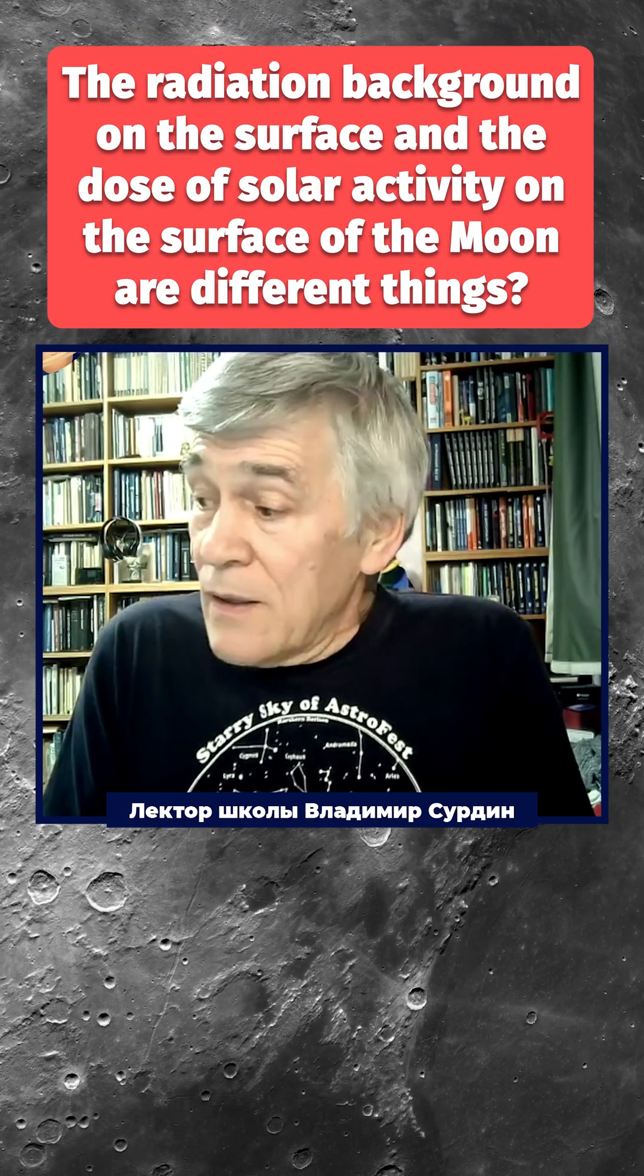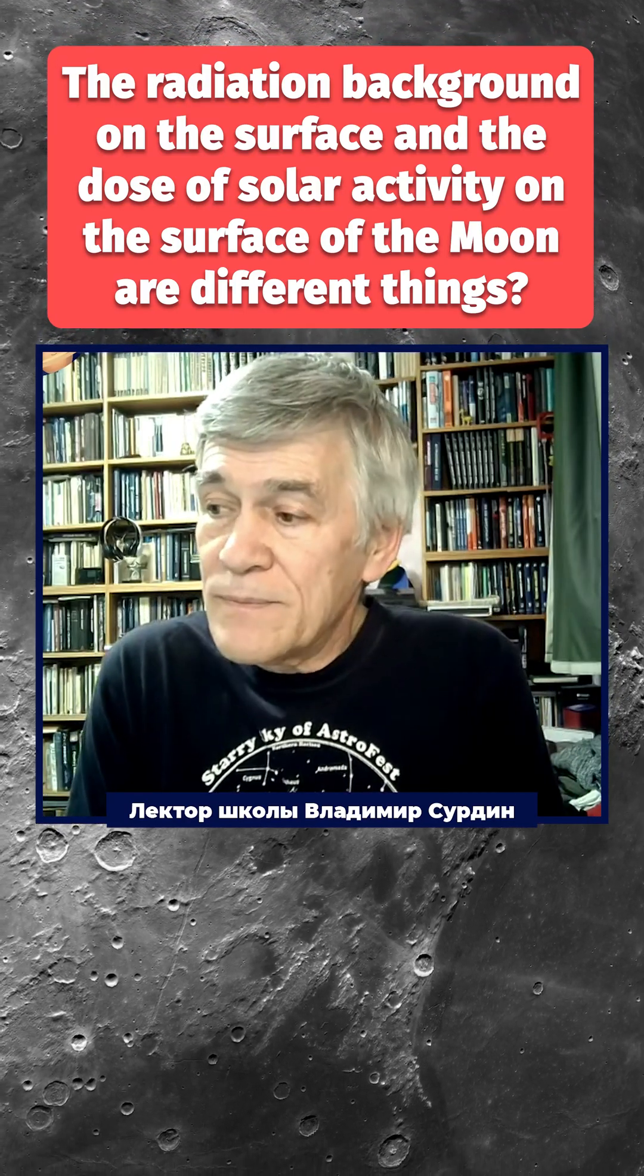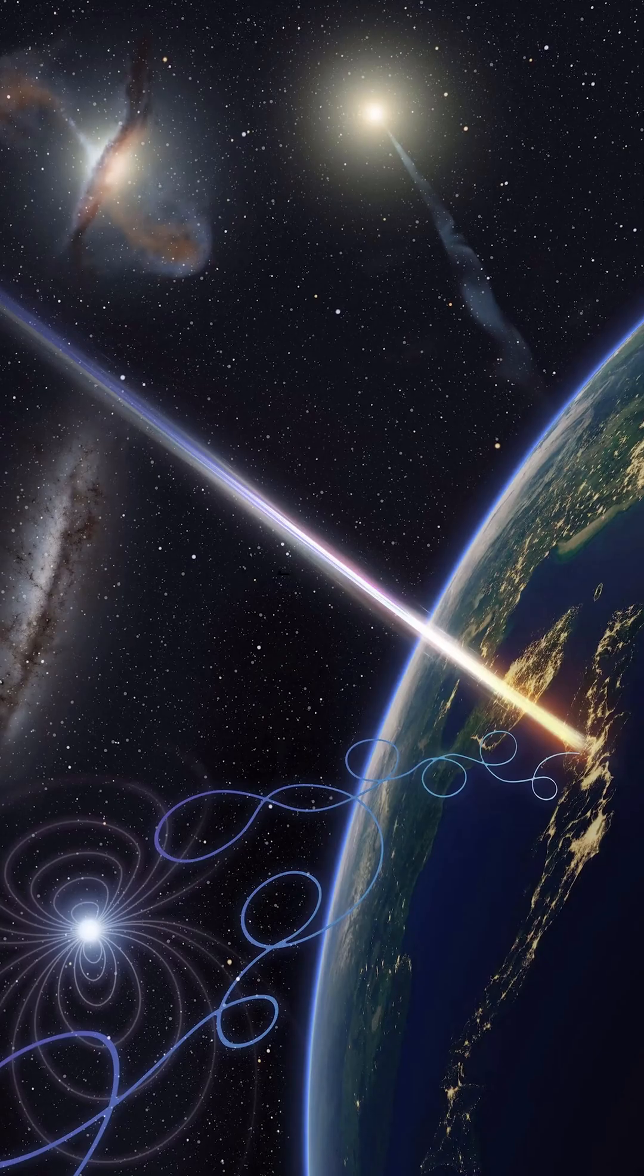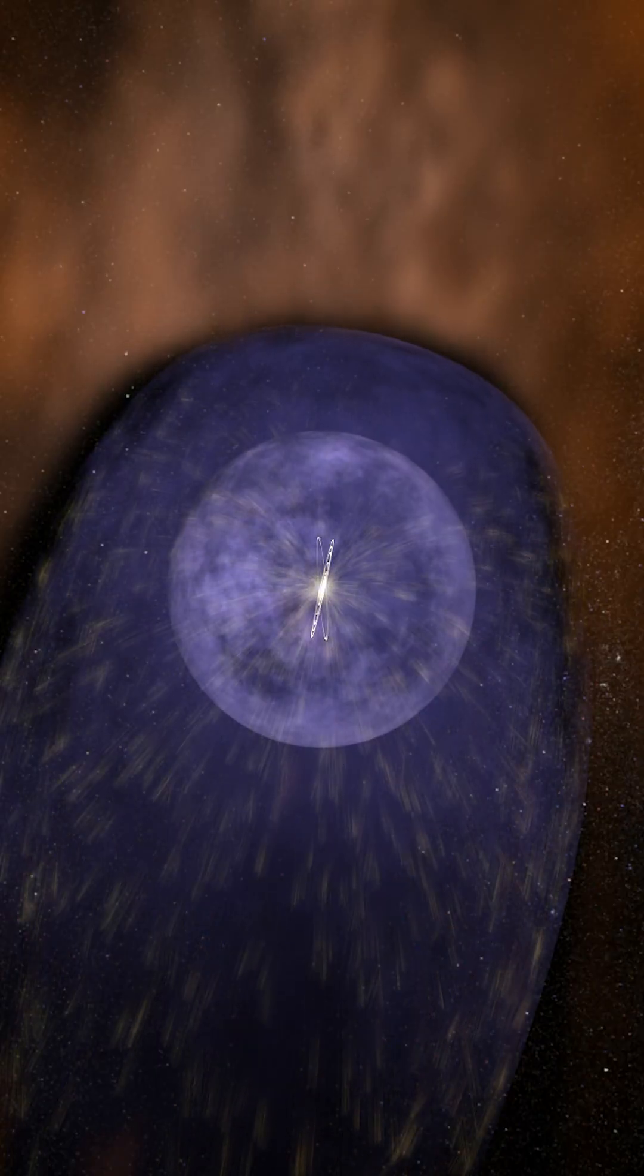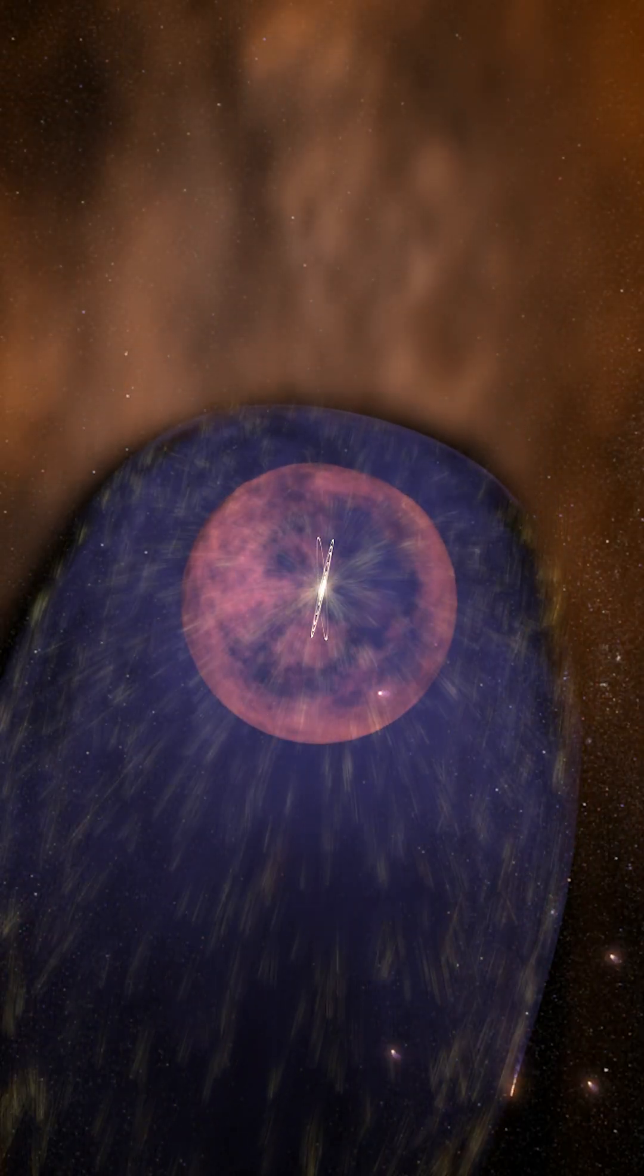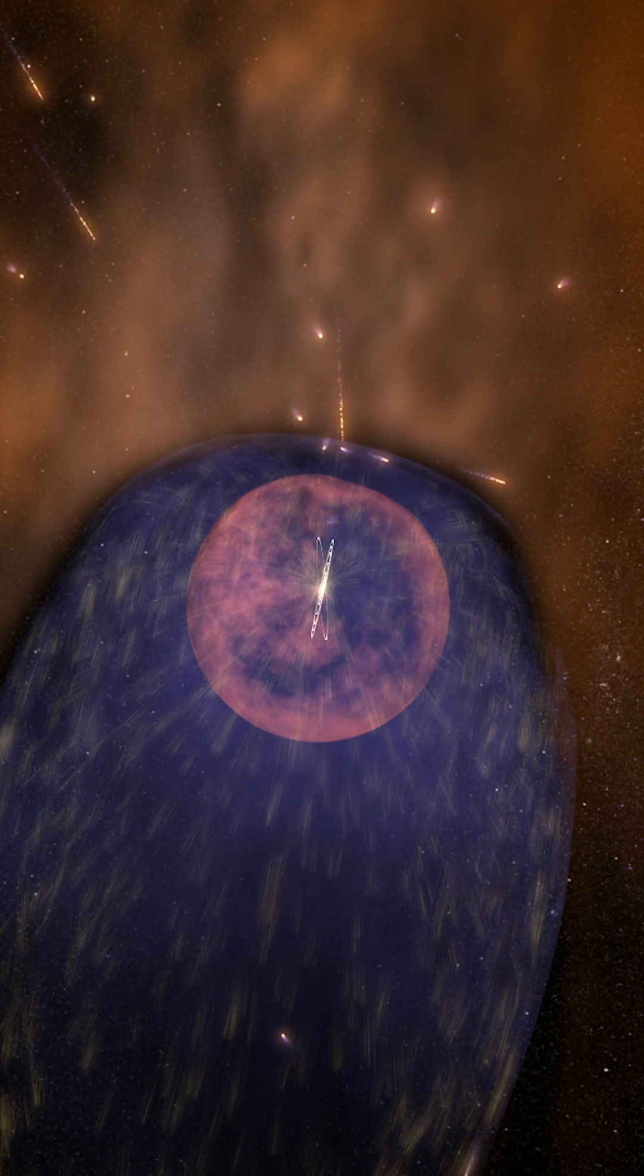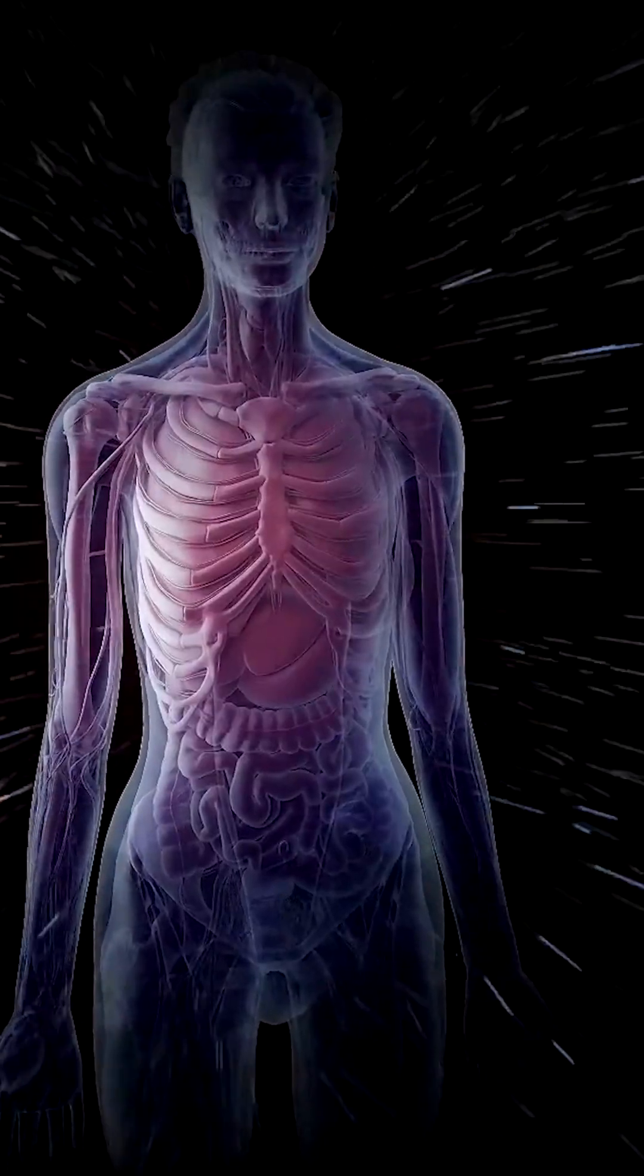Radiation background on the surface and solar activity dose on the moon are distinct. From far away in outer space, from the galaxy, cosmic rays are constantly flying towards us - fast protons. It's not us who are getting hit, but the astronauts, and they're getting a dose of radiation.